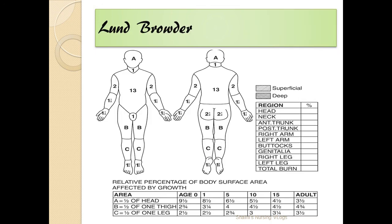The last method is the Lund and Browder chart. This chart helps you accurately estimate the percentage of burns and differs with age — at ages 0, 1, 5, 10, 15, and for adults. The letters A, B, and C on the chart indicate the head, the thigh, and the leg respectively, accounting for proportional changes with age.